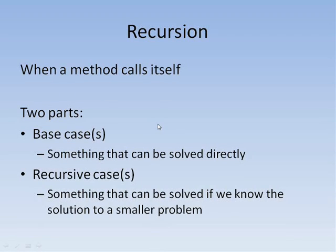Recursion is a very powerful tool for a programmer, but it is often challenging to understand at first. Recursive methods are those that call themselves. When you're first learning to write recursive methods, you may feel like you're cheating. How can you call a method that you haven't written yet? Isn't it wrong to define something in terms of itself?